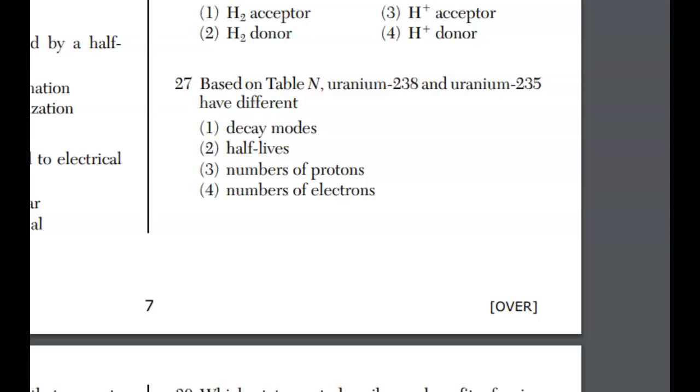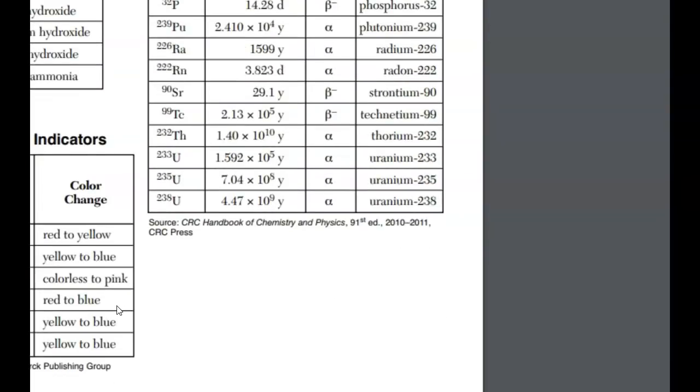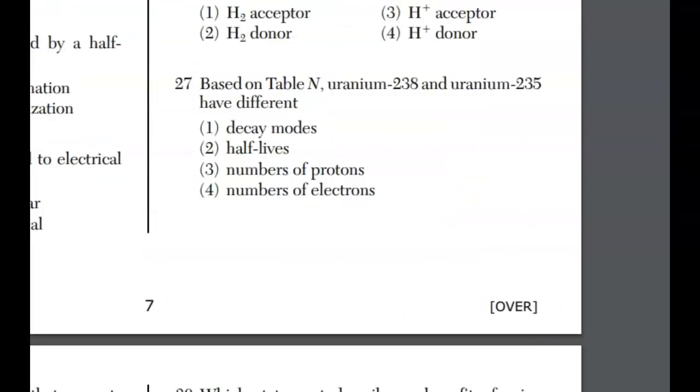For question 27, you are told to go to reference table N. Don't just answer the question, go there. You're talking uranium-238 and 235, and what's different? Here is reference table N. We have uranium-235 and 238. They both have the same decay mode, but what's different would be the half-lives, and of course, they're isotopes. What's the same is the number of protons, what's different is the number of neutrons. The answer is the number of half-lives listed on reference table N.